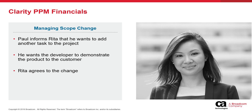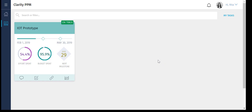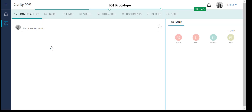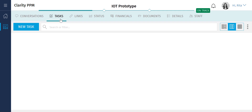Paul informs Rita that he wants to add an additional task to the project. After the code is ready, he wants the developer to demonstrate the product to the customer. Since the project is currently under budget, Rita agrees to increase the scope of the project. Let's review the project plan to see the updated task that has been added.